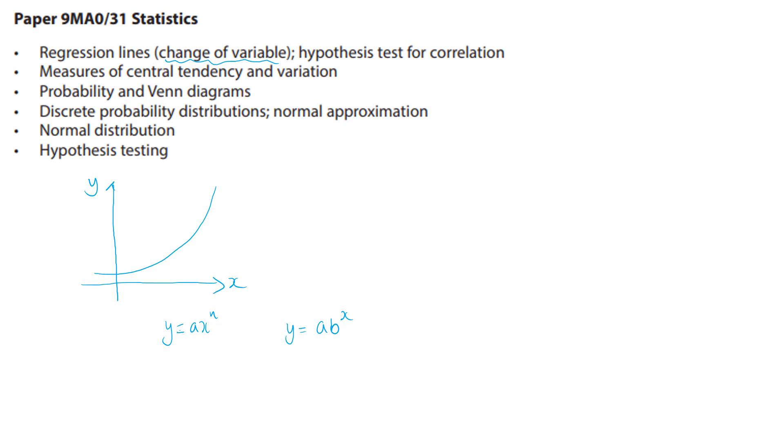But then if we want to apply and take logs to both sides, then you're going to have log a plus n log x for that first type. The second one you're going to have log y equals log a plus x log of b. So in order to get our straight line, we think about the equation of a straight line y equals mx plus c.